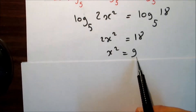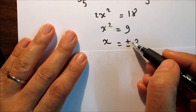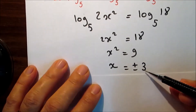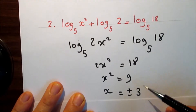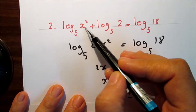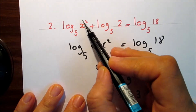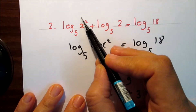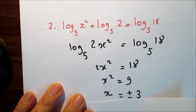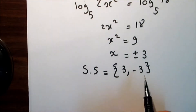Divide by 2: x squared equals 9, so x equals positive or negative 3. We check the negative value — if x equals negative 3, then x squared equals 9, which is still positive inside the logarithm. So the solution set is {3, −3}.